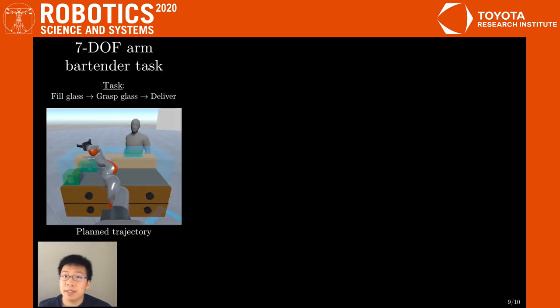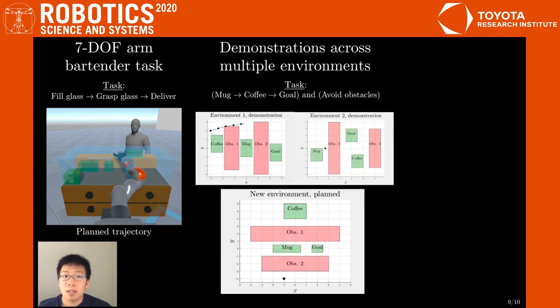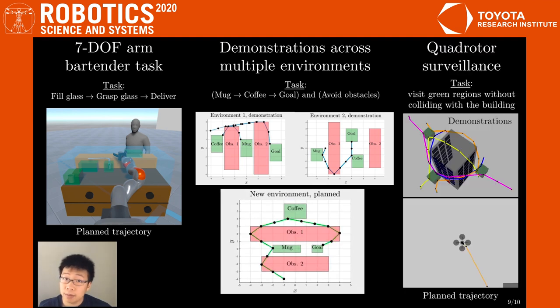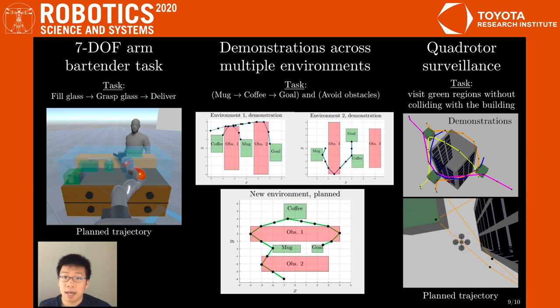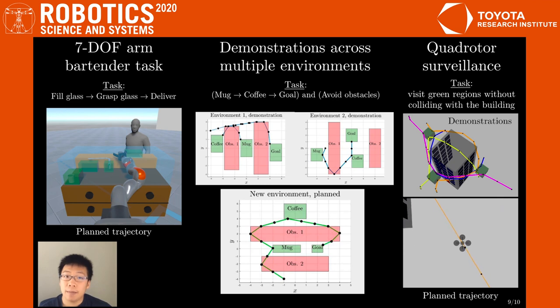We demonstrate our approach on the bartender task, learning the structure and AP parameters of the LTL formula. This enables us to plan trajectories completing the task from novel start configurations. We also show that by learning a high-level abstraction of the task via LTL, we can learn from demonstrations of the same high-level task in different environments, and apply the learned formula to complete the task in new environments. We also evaluate our method on learning a quadrotor surveillance task, learning the LTL structure and AP parameters along with the cost function parameters.